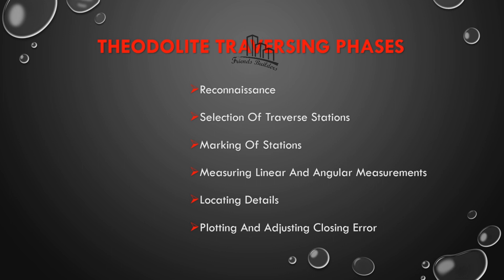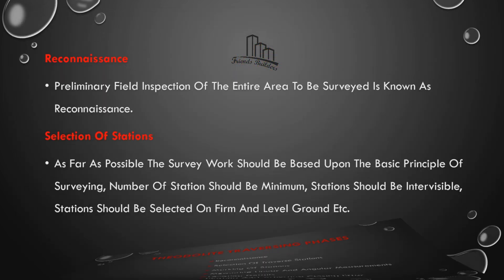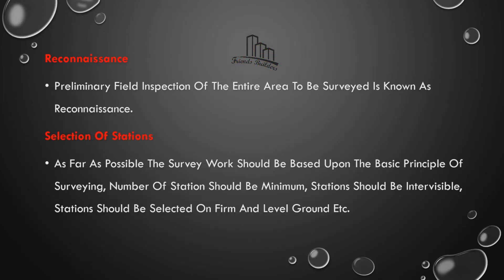Okay, this is the 6-step procedure that we have to do with traverse and we have to follow up. First, recognition is what we need to do — it is a preliminary inspection, that is the site where we need to do the location. Then the selection of stations — with the minimum number of stations you can cover the ground. That is the selection.